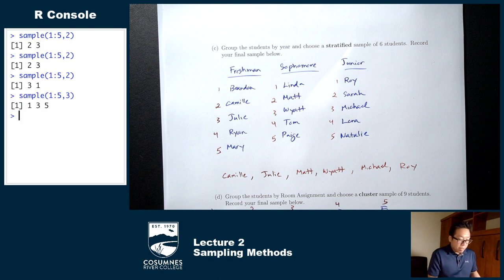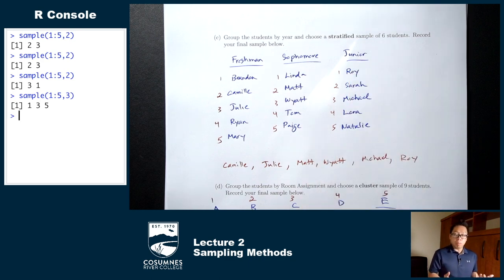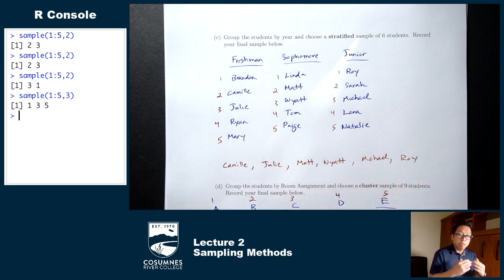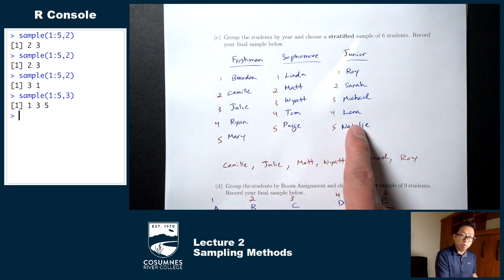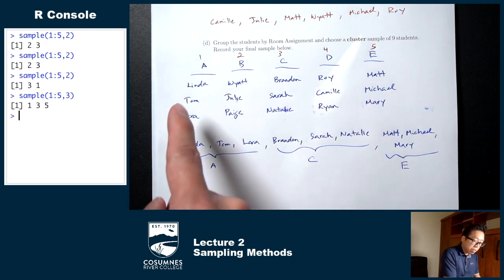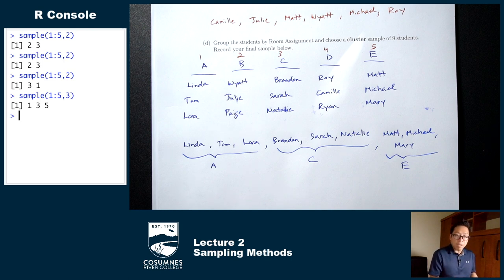When would you want to use each? When I broke students up into freshmen, sophomores, and juniors, I expect differences between those groups — freshmen are different from sophomores, who are different from juniors. In that situation it's important to have representatives from each group, so you'd want a stratified sample. When I broke students up by room assignment, I don't really expect much difference between students in room A and room B. In that case, it's okay not to have representatives from each group, and you could use a cluster sample.